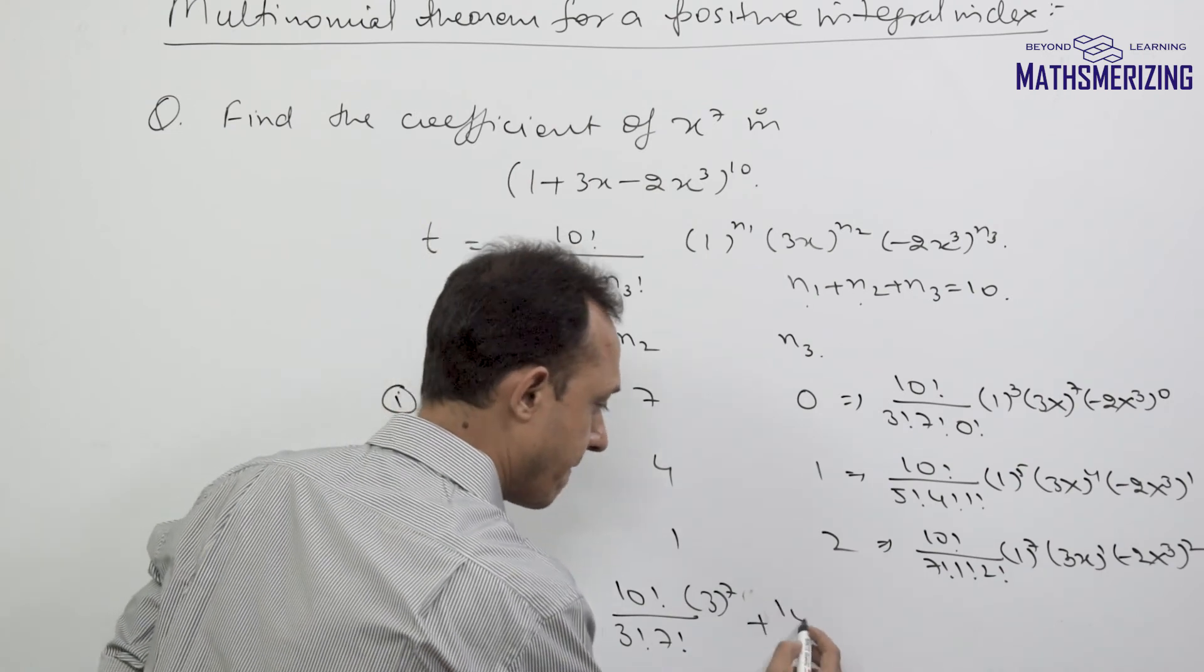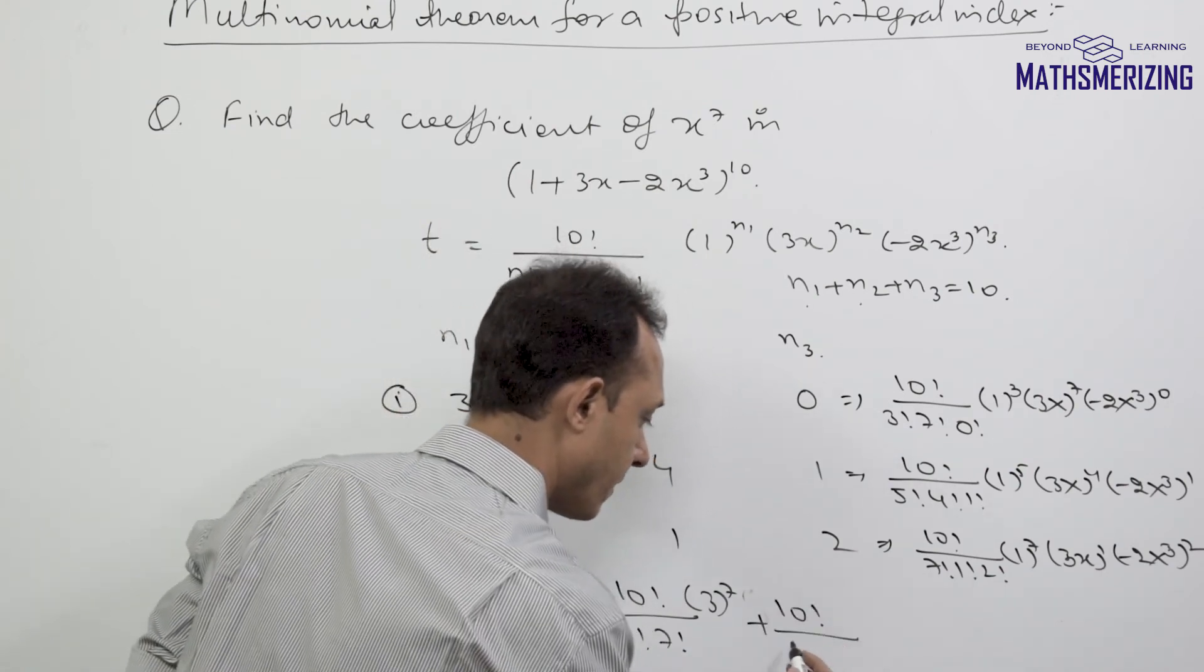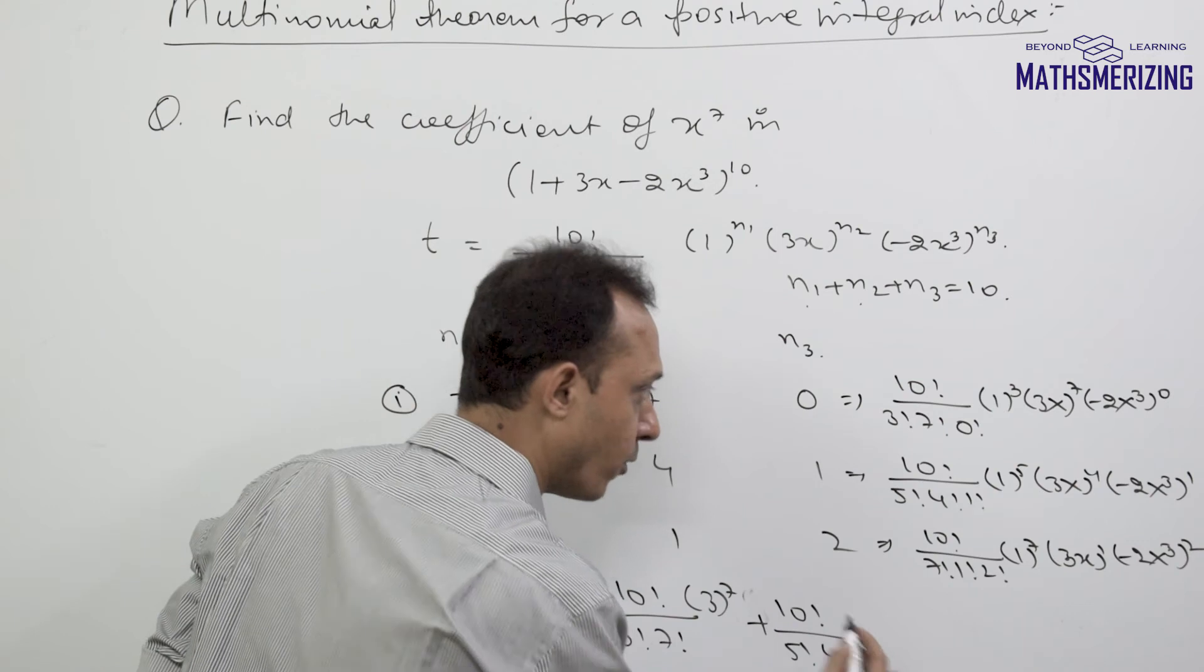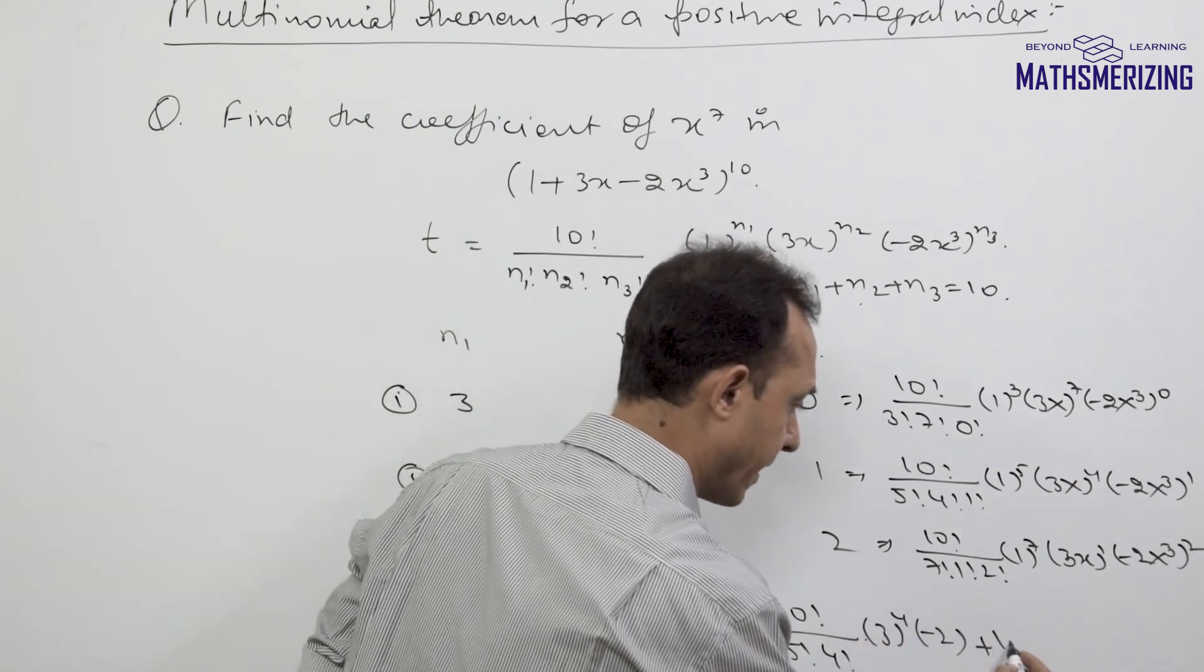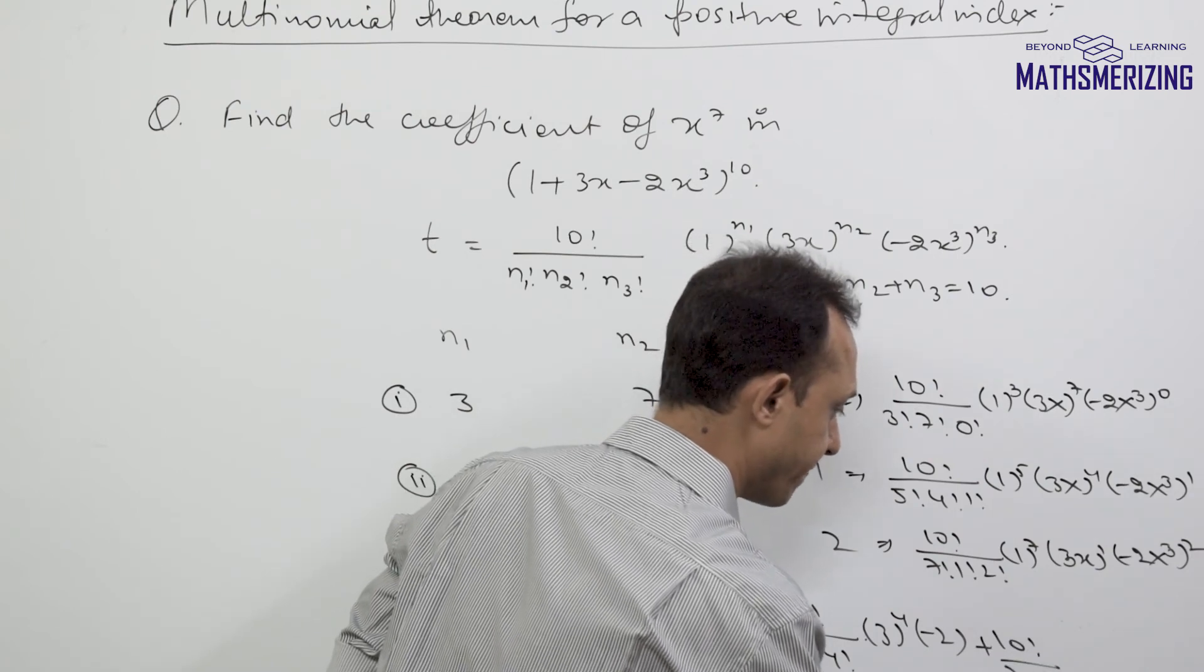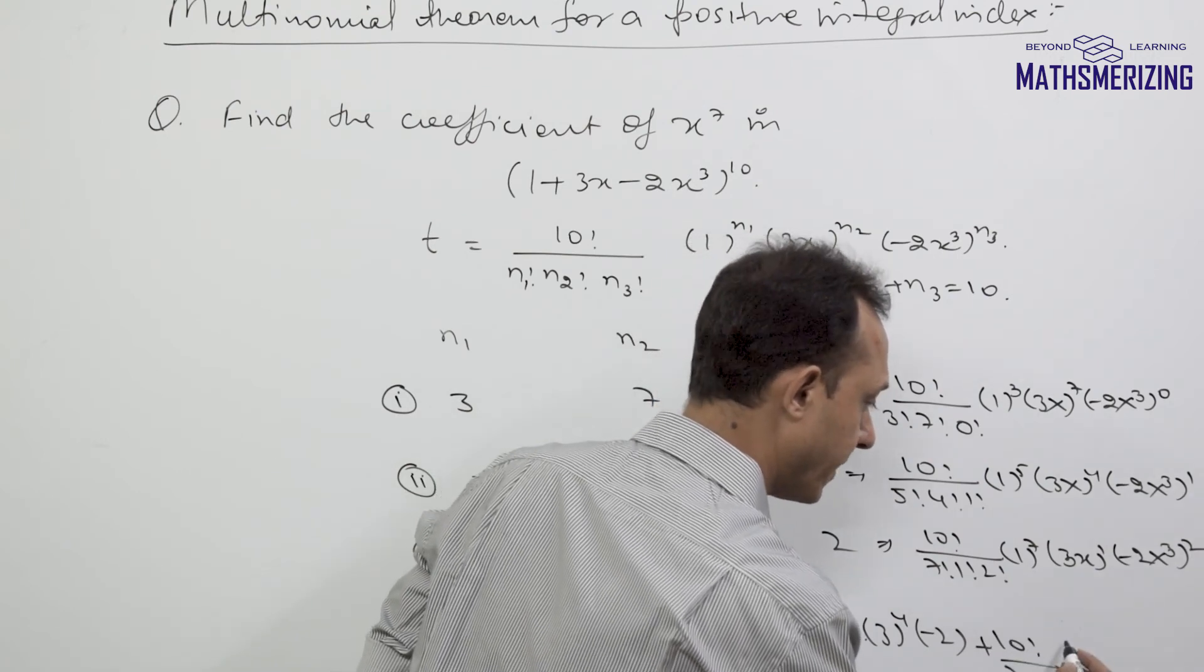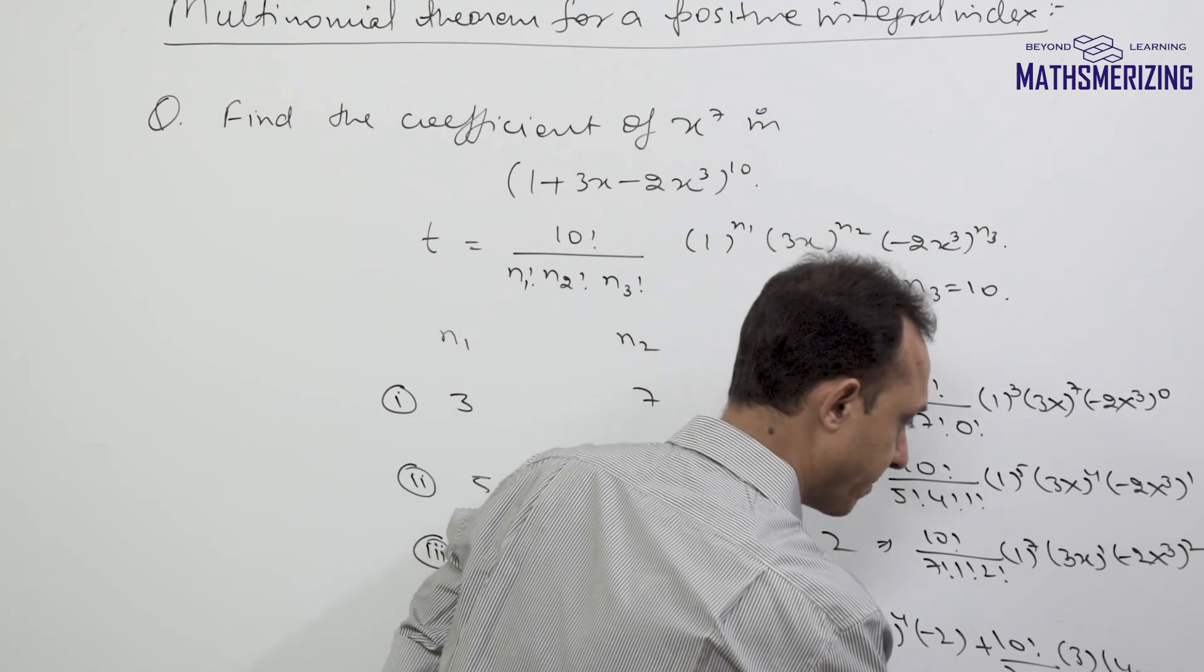Plus 10!/(5! 4!) times 3^4 times (-2), and again 10!/(7! 2!) times 3 times (-2)² which is simply 4.